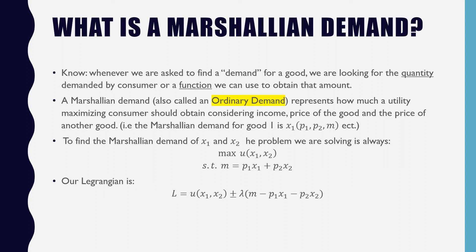To find the Marshallian Demand of x1 and x2, the problem we are solving is always to maximize our utility function subject to our budget constraint. Our Lagrangian is L equals u(x1, x2) plus or minus lambda times (m minus p1*x1 minus p2*x2).